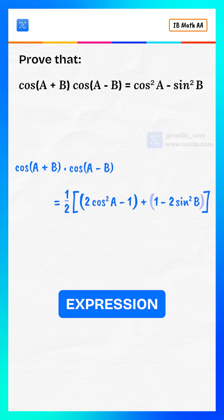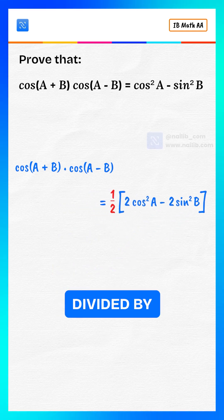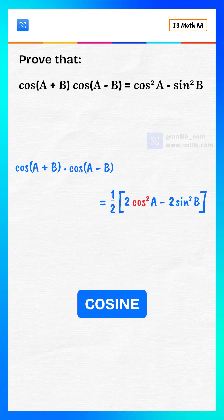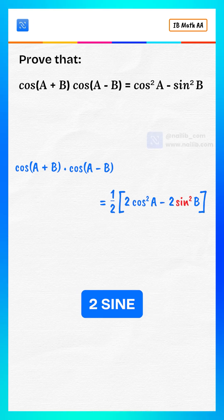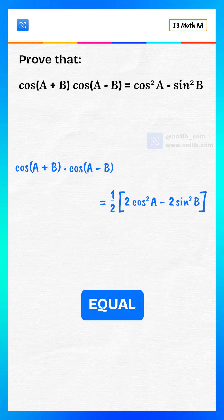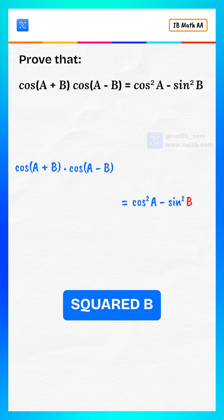Substitute into the expression. Now we simplify that: one divided by two multiplied by two cosine squared A minus two sine squared B, which equals cosine squared A minus sine squared B.